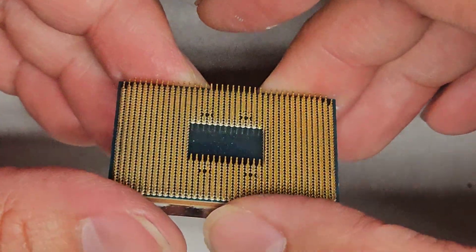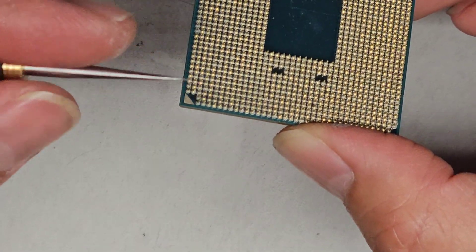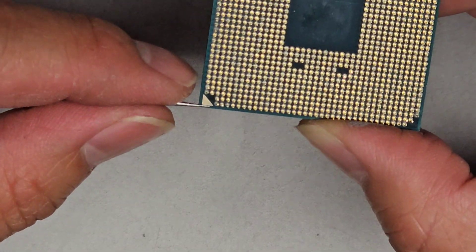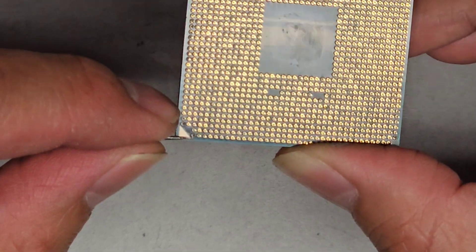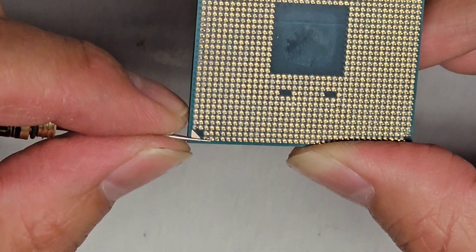Basically, in order to bend them back, when they're super flat, you need a super thin tool. So I use this little needle. Some were bent like this way. You basically get underneath, like right where the pin is, and then you slowly kind of just work it.